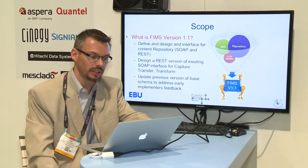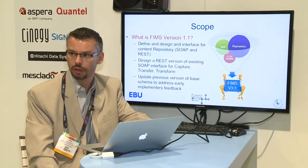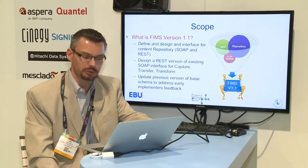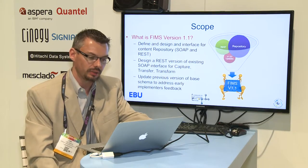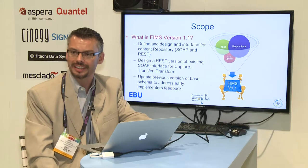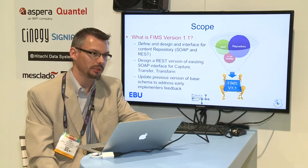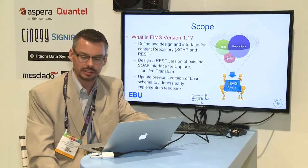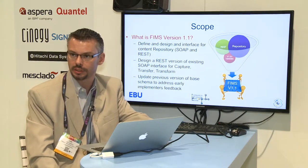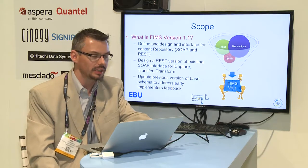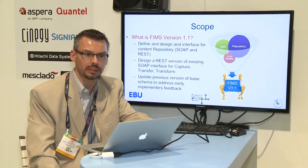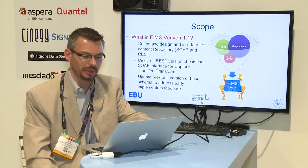So the repository is a new one, and in terms of size it's quite large — you're going to see that. The second item included in FIMS 1.1 is we added a REST interface on top of the existing SOAP interface for the capture, transfer, and transform services. The last set of items included is a set of small changes to the object model based on feedback received from implementers.